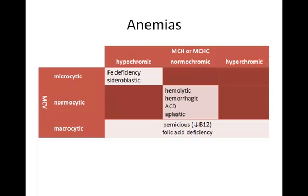For our purposes, if cells are normocytic, they're normochromic as well. Normocytic normochromic anemias result from destroying red blood cells before their expiration date, from losing red blood cells through bleeding, or from conditions which stop or slow bone marrow production of red blood cells — such as anemia of chronic disease (ACD) or aplastic anemia. Finally, if red blood cells are macrocytic, it's because of a nutritional deficiency: either a B12 deficiency or a folic acid (folate) deficiency. You may be given additional lab results to help you distinguish between these.